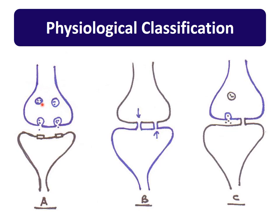Now physiological classification. If a chemical is released from the first neuron and acts on the next neuron, that is called a chemical synapse. If neurons are joined with gap junctions and impulse is sent via those gap junctions, that is called an electrical synapse. Some synapses have both properties — chemical release and gap junctions — and these are called conjoint synapses. So there are three types: chemical, electrical, and conjoint.